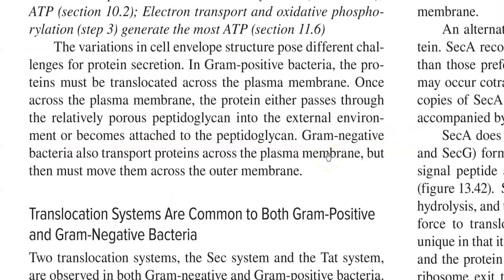During transport of proteins in the cell, variation in the cell envelope poses different challenges for protein secretion in both gram-positive and gram-negative bacteria. In gram-positive bacteria, protein must first be translocated across the plasma membrane. Once it crosses the plasma membrane, it can either pass through the relatively porous peptidoglycan into the external environment or attach to the cell wall — the peptidoglycan itself.